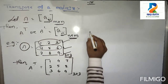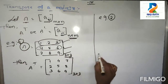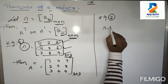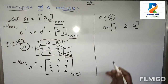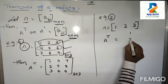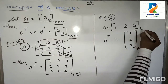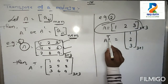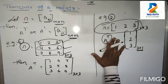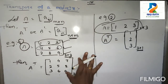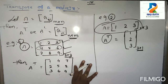Let's take example number 2. Suppose A equals the row matrix 1, 2, 3 of order 1 by 3. Then A transpose is equal to the column matrix 1, 2, 3 of order 3 by 1. So in general, the transpose of a row matrix becomes a column matrix, and the transpose of a column matrix becomes a row matrix. That is all about transpose of a matrix.